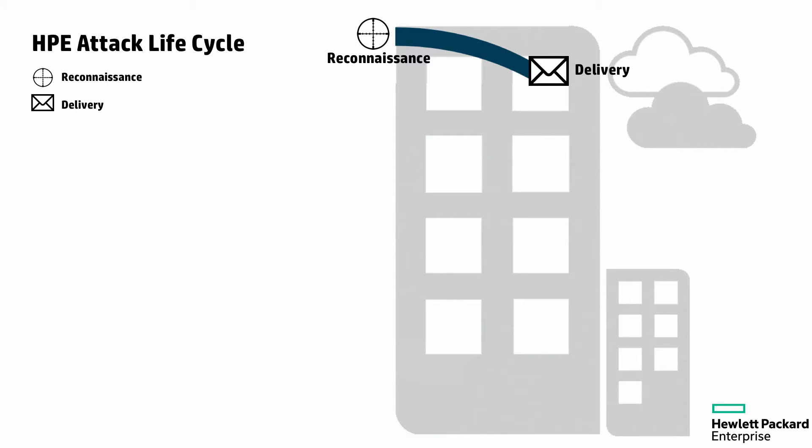Next, from that reconnaissance, we figure out the most effective way to deliver something that will allow us to get access to the organization. As the statistics currently show, that's typically going to be through some sort of zero-day malware attack — in most cases delivered via email, some sort of phishing attack, or an attachment delivered to a key target individual. But again, it's the reconnaissance that gives us that information: where do we need to focus, who has the right kind of access rights, who works within the organization we should target, and even what kind of antivirus or malware toolset they have — which guides the delivery mechanism.